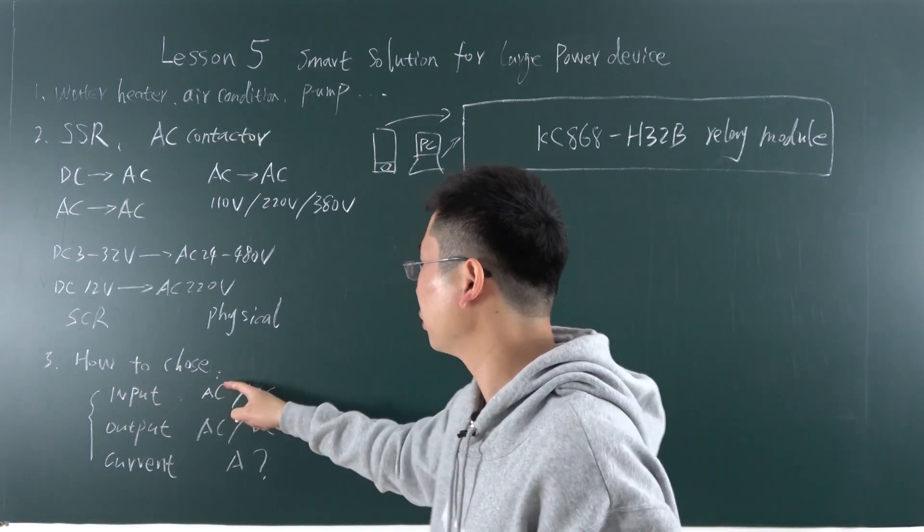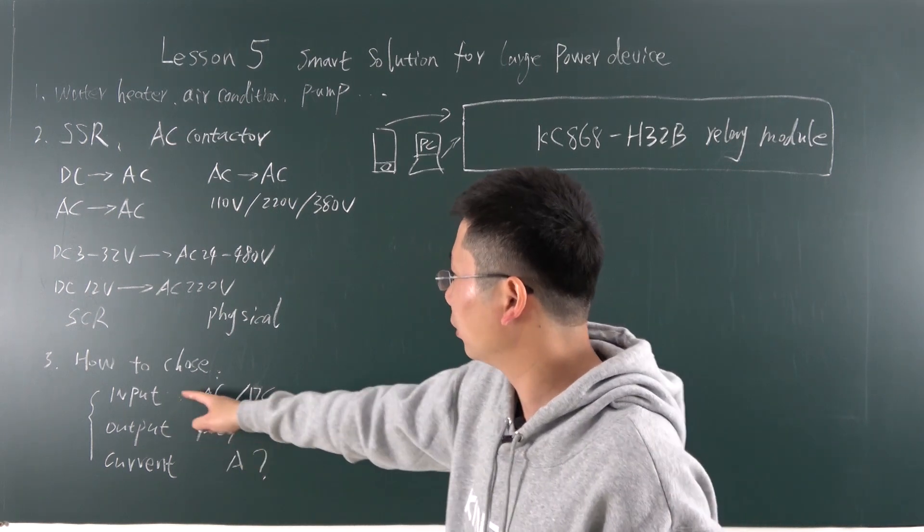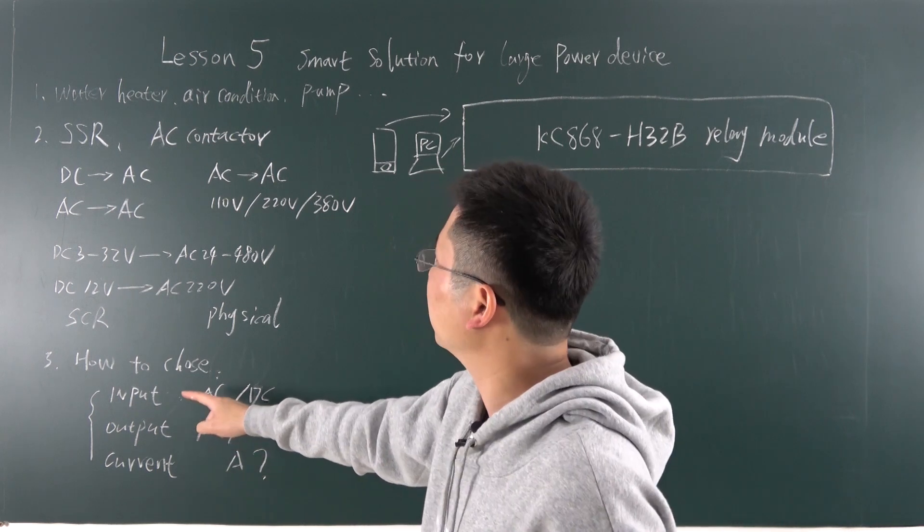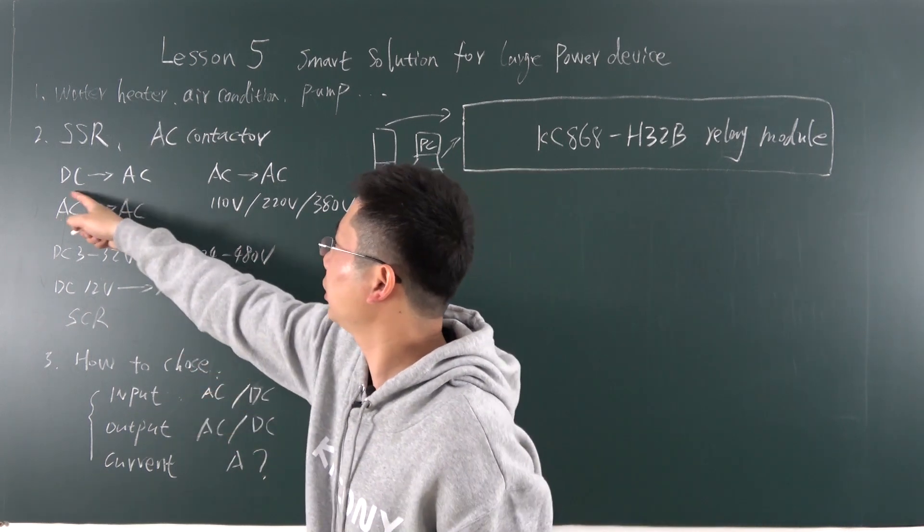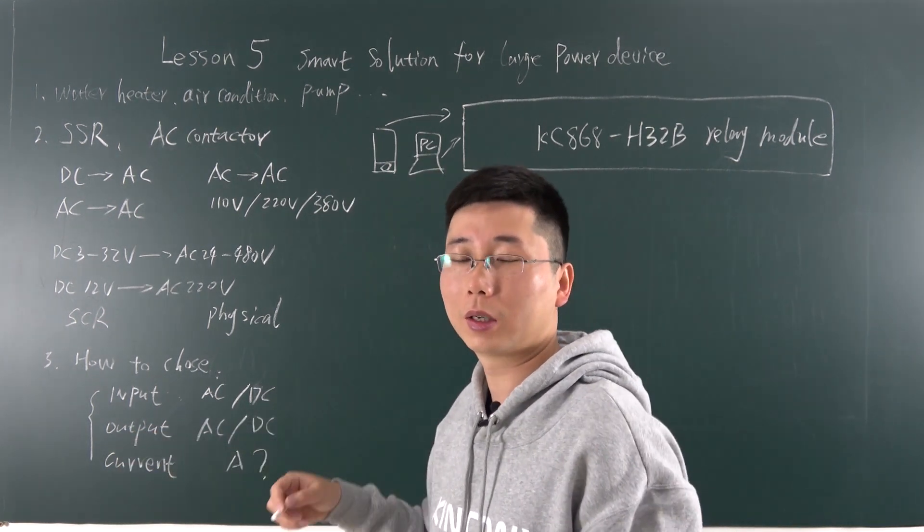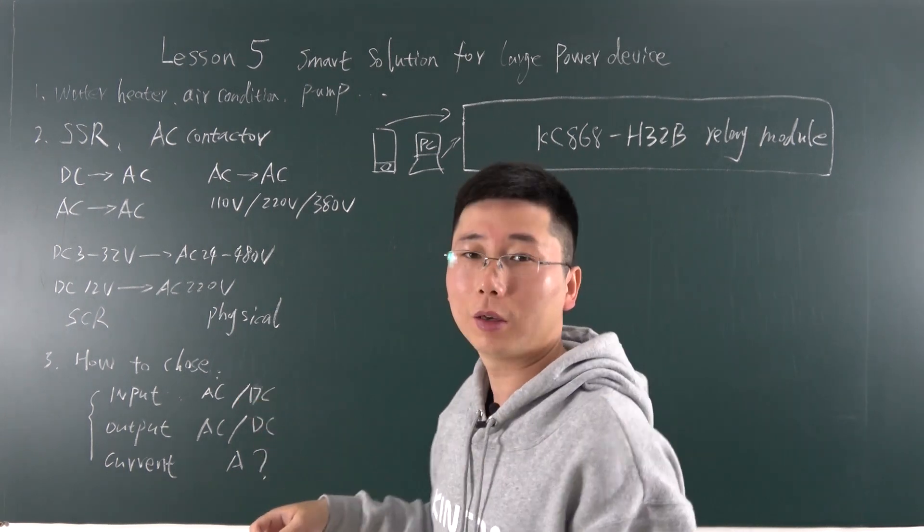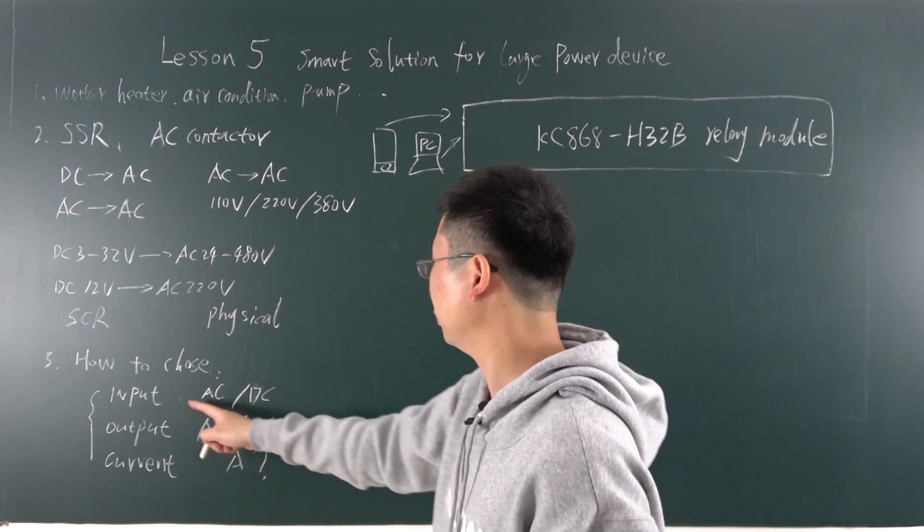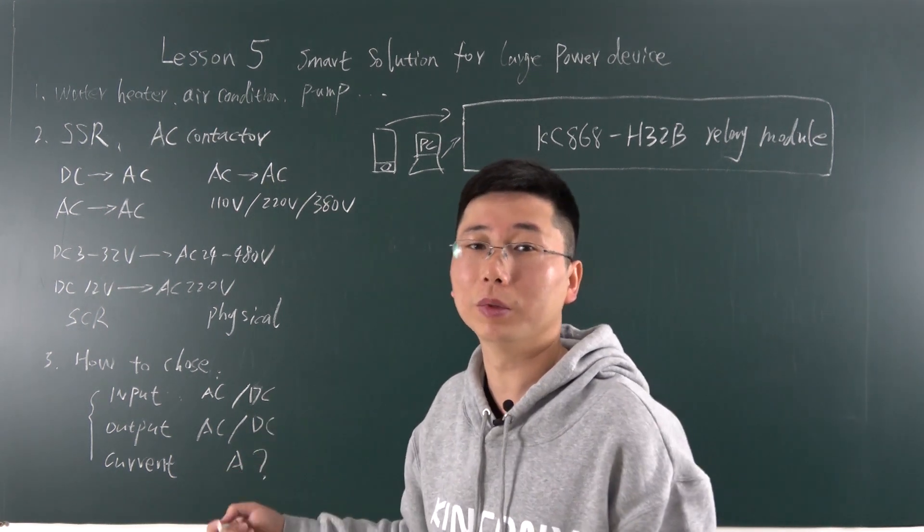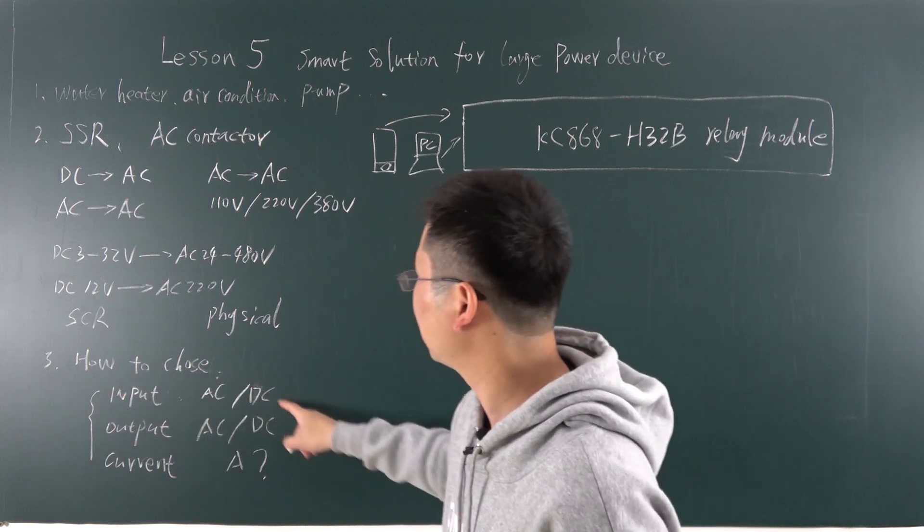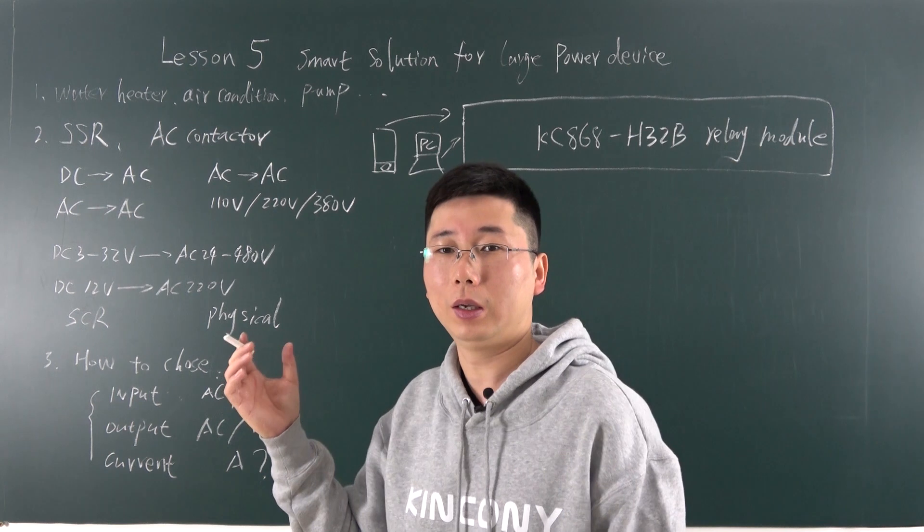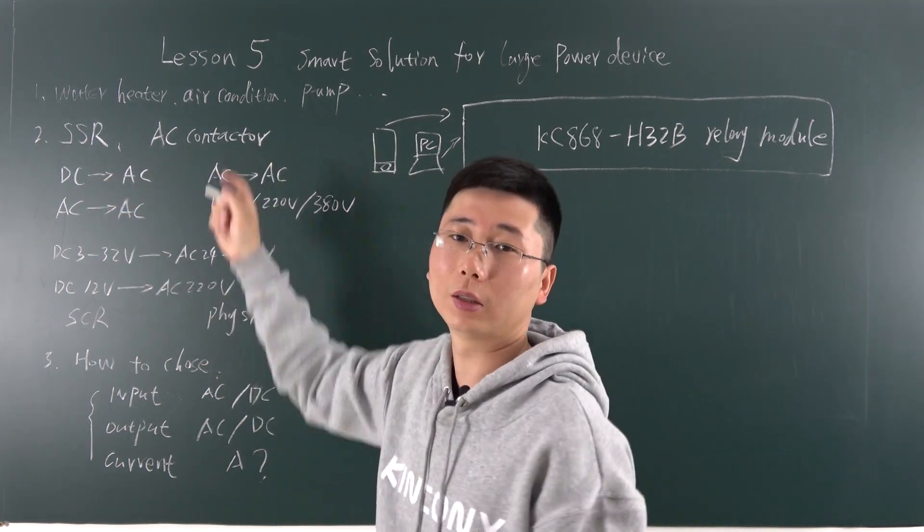Three, how to choose? We just need to confirm this input, output and the current. What input you will use. Like use DC or use AC. And what is output to control? Like you can control AC load. Or you can control DC load. It's up to you. And this is current. How many amperes your load will be used? Just these three settings. You can choose a SSR or AC contactor to use.